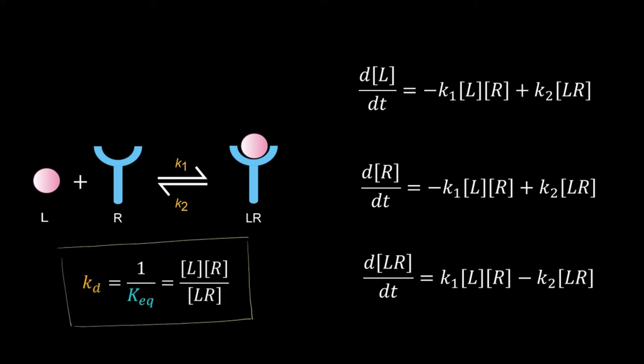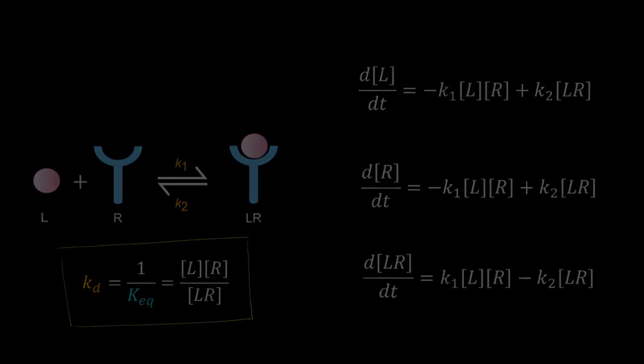Usually k1 and k2 are not measured separately in experiments. Instead, one measures the affinity of the ligand in terms of the dissociation constant Kd. The dissociation constant is the inverse of the equilibrium constant. By definition, Kd equals L times R divided by the concentration of LR, the complex. Remember, L and R are the concentrations of the free ligand and free receptor at equilibrium, and LR is the concentration of the complex at equilibrium.